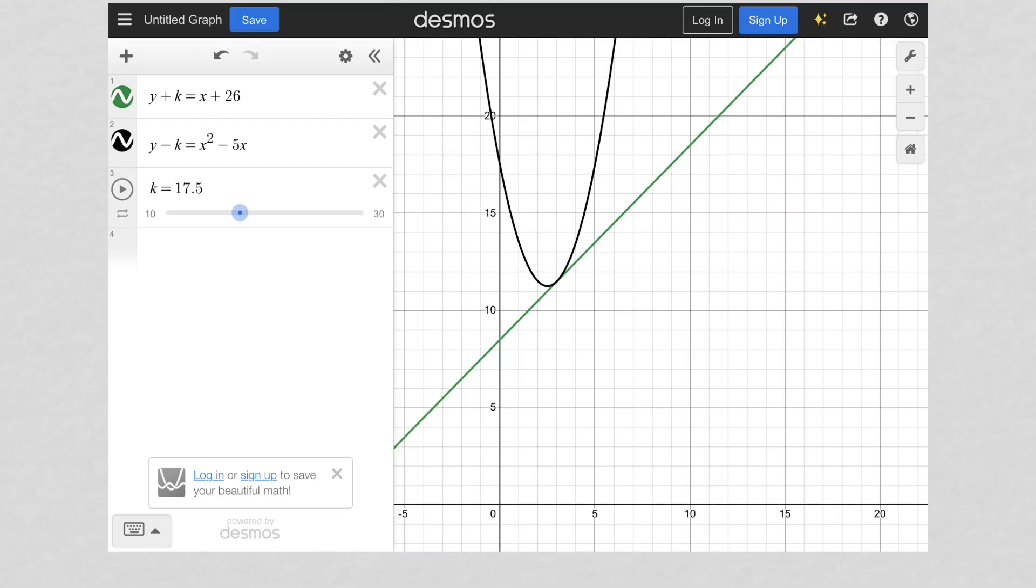So for Desmos, I plugged in both of the original equations. I set k as a slider. And then basically, the sliders, they allow you to go between 0 and 10. I'm using the visual understanding of exactly one distinct real solution, which means that the two graphs intersect at exactly one point. We know that one of these is linear, and we know the other one is a quadratic or parabola. So we know that the line should be tangent to the parabola in some way.